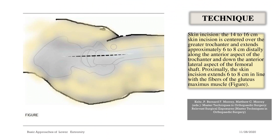Skin incision: a 14 to 16 cm skin incision is centered over the greater trochanter and extends approximately 6 to 8 cm distally along the anterior aspect of the trochanter and down the anterolateral aspect of the femoral shaft. Proximally, the skin incision extends 6 to 8 cm in line with the fibers of the gluteus maximus muscle.